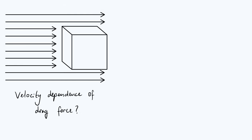Hi everyone. You may be aware that an object moving through a fluid experiences a drag force which is approximately proportional to the object's velocity when it's going relatively slowly, but proportional to the square of its velocity when it's going more quickly. What we're going to do in this video is use some fairly simple physical arguments to gain some intuitive understanding as to why there are these two distinct regimes for the velocity dependence of the drag force.